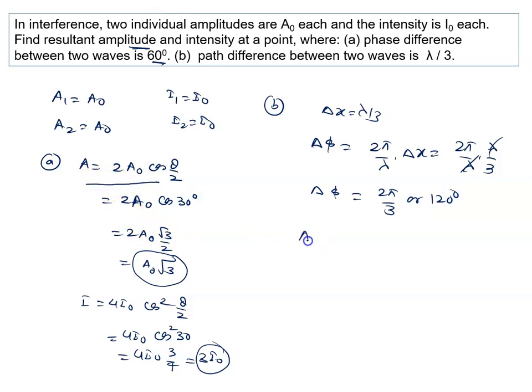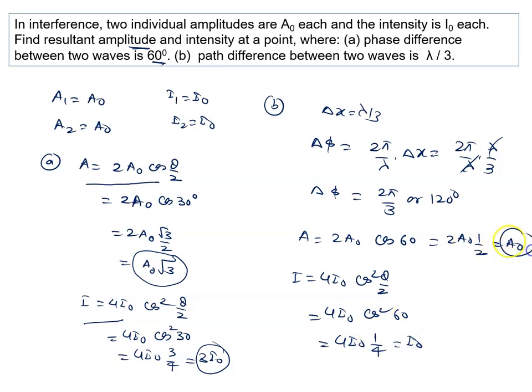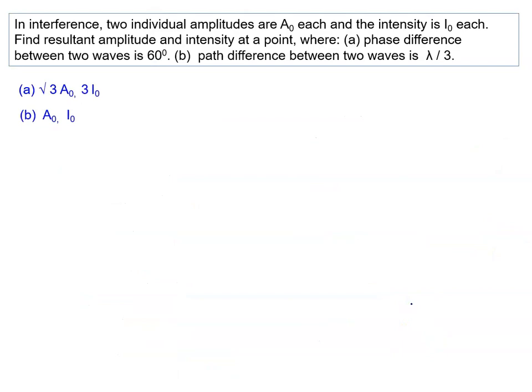We will write the resultant amplitude: 2A0 cos(θ/2), which is 120° divided by 2, so 60 degrees. It is 2A0 cos 60°, which is 1 by 2, so it is A0. The intensity is 4I0 cos² 60°, which is 1 by 2 squared, that is 1 by 4, so that is I0. The answer will be A0 and I0.